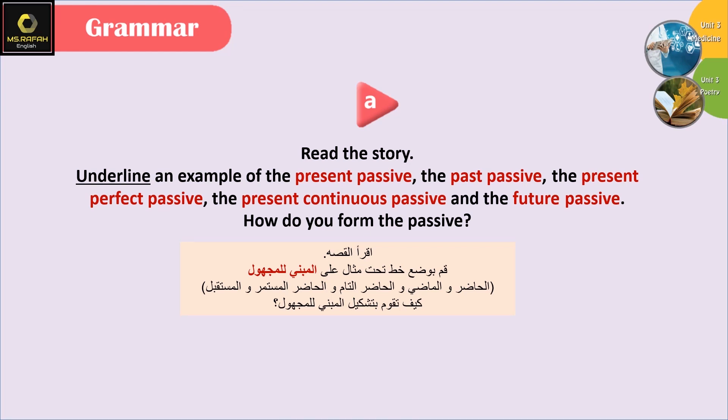عنا هلأ نص حنحدث فيه جمل المبني للمجهول بجميع أنواعه سواء الماضي أو الحاضر أو المستقبل.